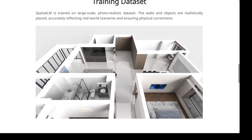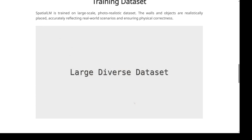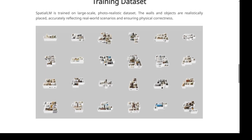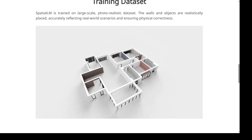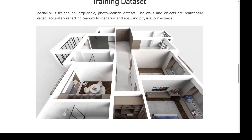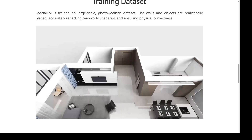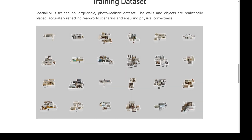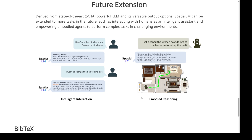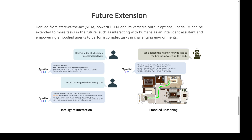Let's break down the Spatial LM pipeline. The first step is the input — images or an existing point cloud. If the input is a video, there's an important preliminary step: 3D reconstruction, using something called MASt3R SLAM. MASt3R SLAM stands for Monocular Algebraic SLAM for Robotics. It takes those flat 2D images from video and builds the 3D point cloud. It can simultaneously figure out the layout of the environment and track the camera's movement through it — all using just a single camera. Once that point cloud is built, the core Spatial LM processing can begin.